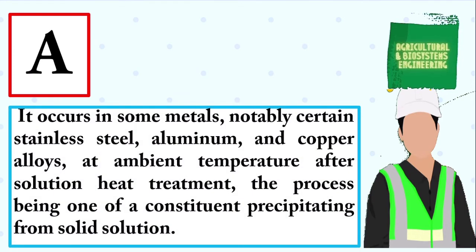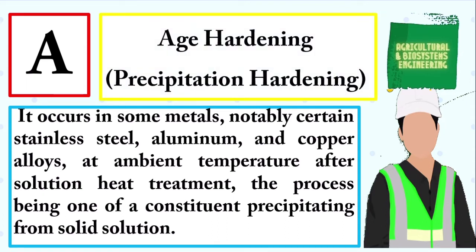It occurs in some metals, notably certain stainless steel, aluminum, and copper alloys, at ambient temperature after solution heat treatment, the process being one of a constituent precipitating from solid solution. The answer is: age hardening or precipitation hardening.